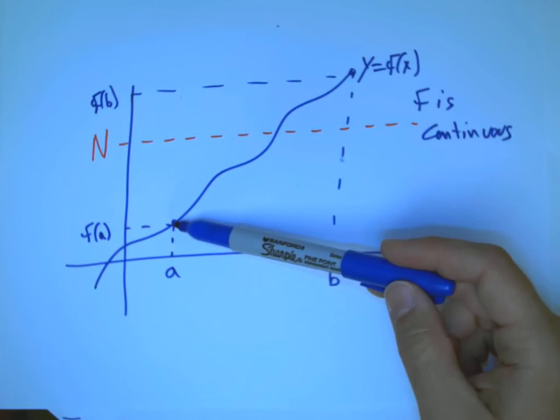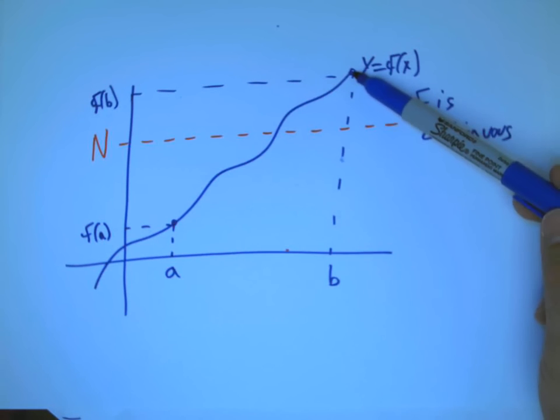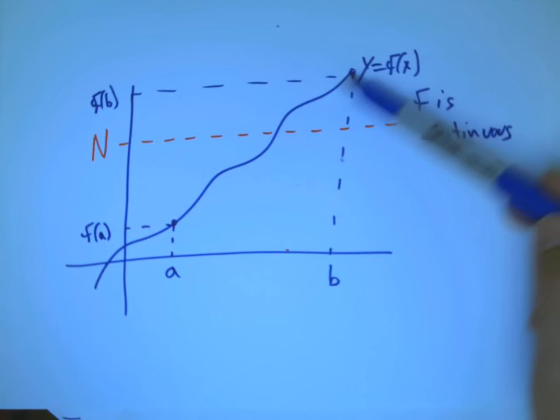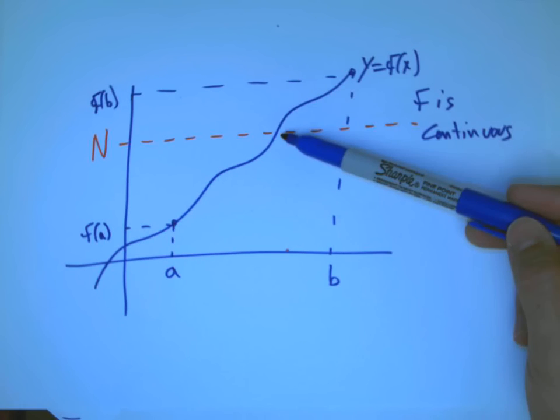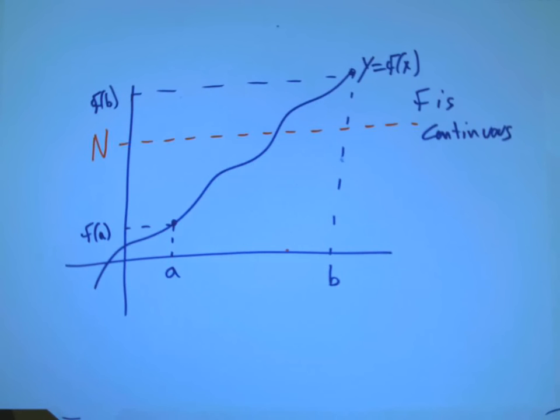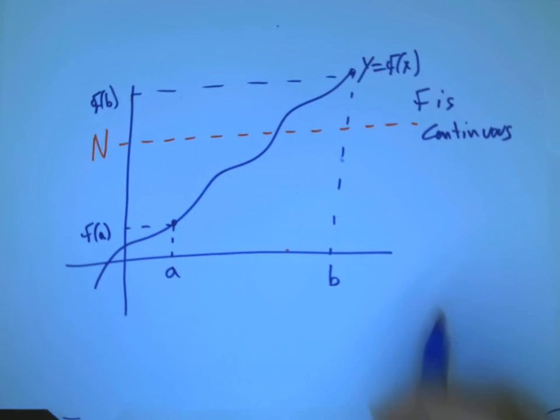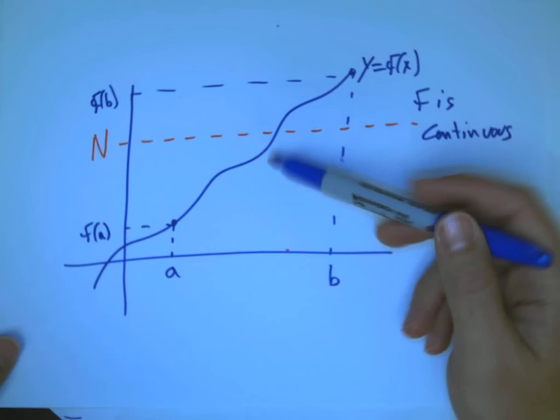Remember, one of the ways to think about continuous function is it's the kind of thing you can graph without your pen leaving paper. And if you have to go from here below n and up to here as your destination above n and you can't, your graph can't leave the paper, it's pretty obvious that you're going to have to cross this.